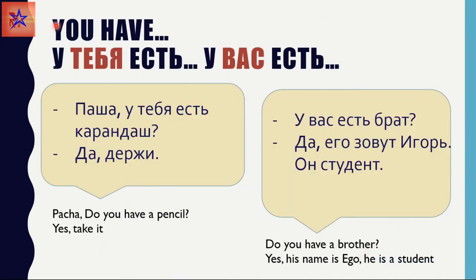Now let's see the 'you' forms. У тебя есть and У вас есть. The difference is that У вас is more polite when referring to one person, or when you address several people in a group. For example in a dialogue: Паша, у тебя есть карандаш? — Do you have a pencil? — Да, держи. — Yeah, take it. У вас есть брат? — Да, его зовут Игорь.